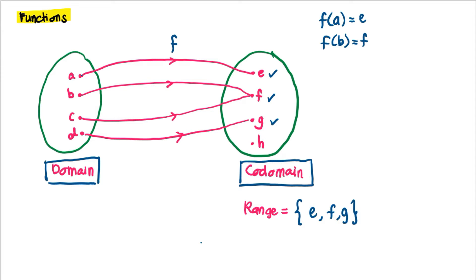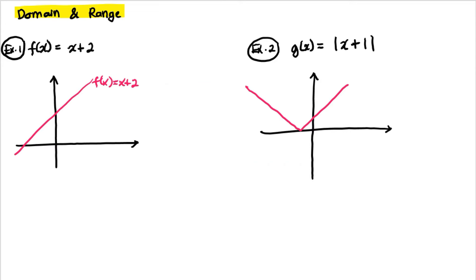Let's look at some examples to illustrate domain and range. Suppose we have the function f(x) = x + 2. We can see that the object is on the x-axis, and we can choose any number on the x-axis.